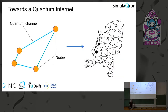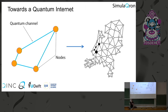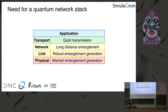We don't just want to build a small quantum network — we want a scalable design and ultimately a quantum internet. Furthermore, this should be a universal, programmable network where you can run any application you want, essentially a service provided to anyone. For this, we need abstractions that hide the hardware, so as a programmer you don't need to think about how qubits are encoded or how entanglement is generated.